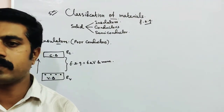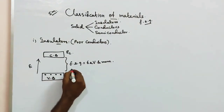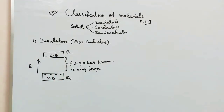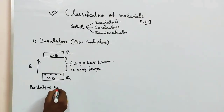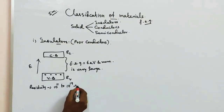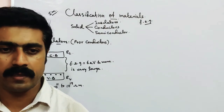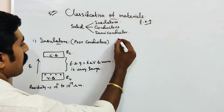That means electricity cannot be produced. For insulators, the forbidden energy gap is very large, so resistivity is very high — in the range of 10 power 11 to 10 power 19 ohm-meter. Resistivity is maximum for insulators, meaning their immunity to current flow is very high.